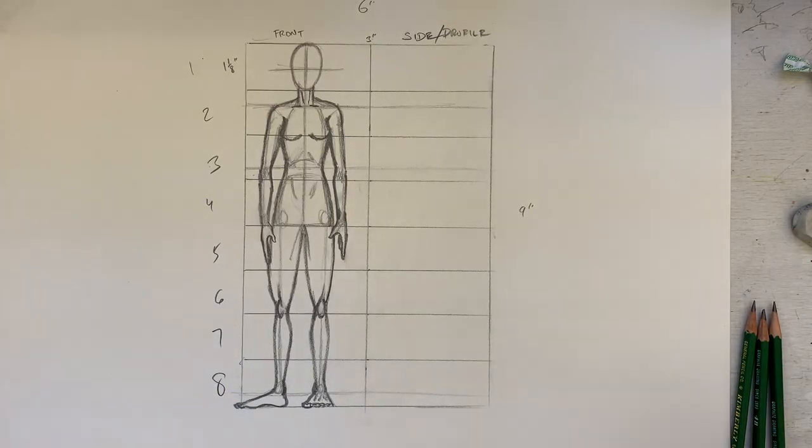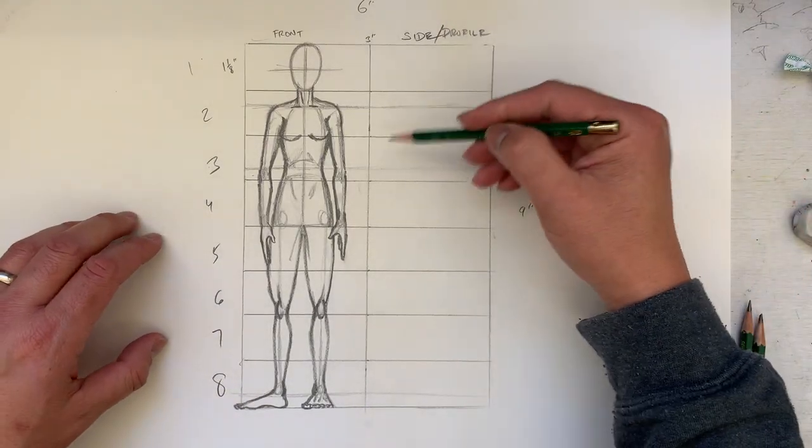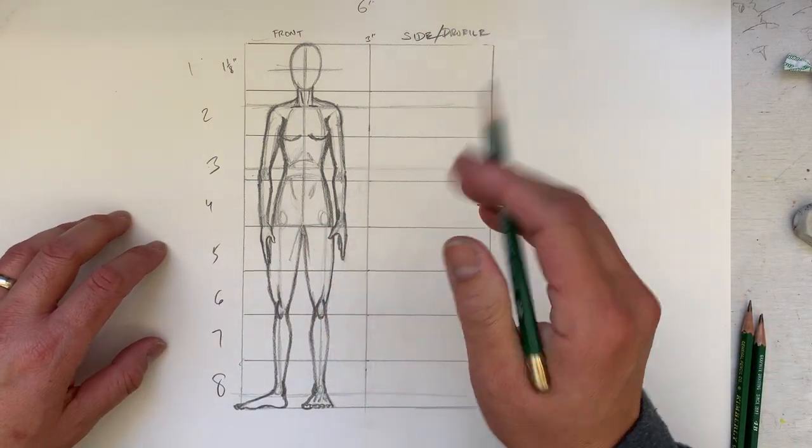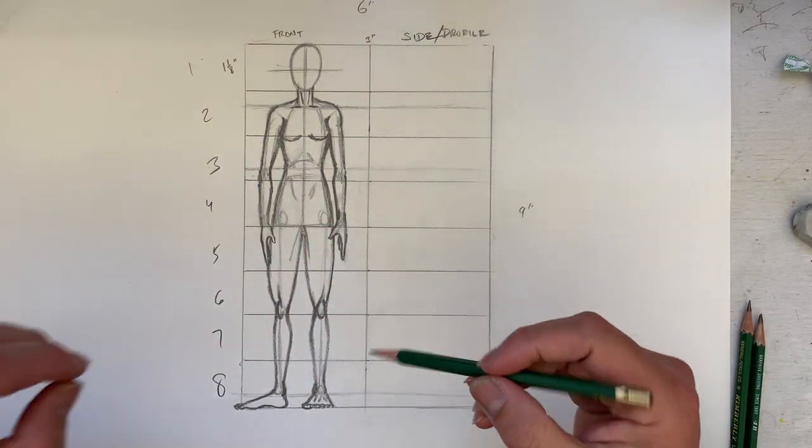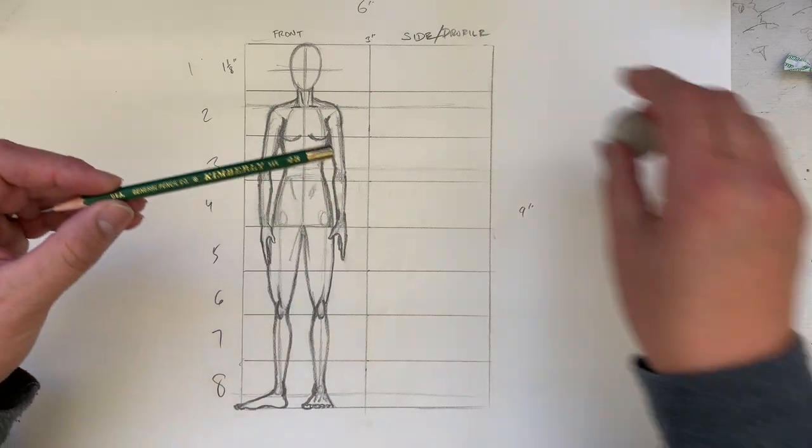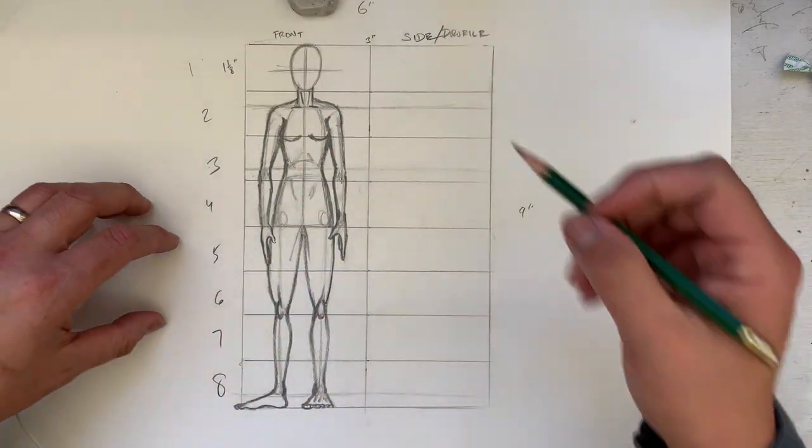All right, so again, we're working on the side view of the female form. We are working on page 19 in your books. Make sure you get your pencil and eraser out.